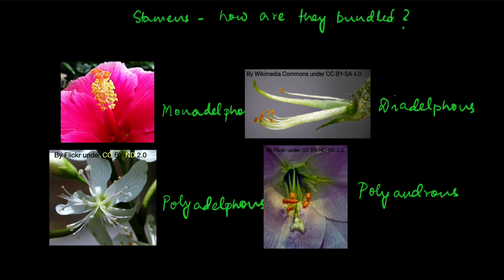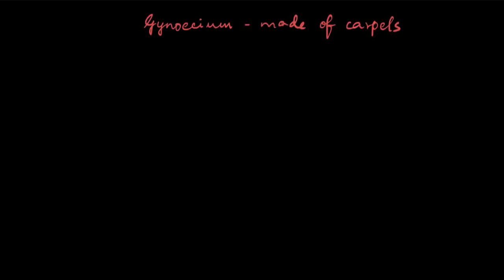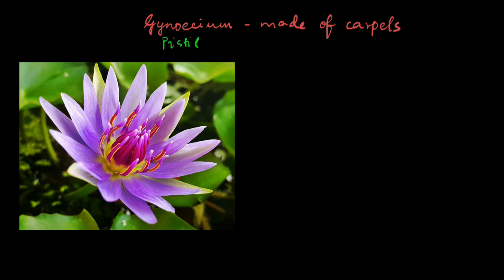Now let's take a look at the gynoecium. The gynoecium is the female part of the flower and is also called pistil. The pistil is made up of carpels. The gynoecium of a flower can have one carpel or many carpels. In some flowers, the carpels are not joined — they are free from each other, like you can see in this flower. The ones at the center, the pink or purple ones, each of these tubes at the center is a separate carpel. We call such a gynoecium apocarpous — apo means separate, so they are away from or separate from each other.